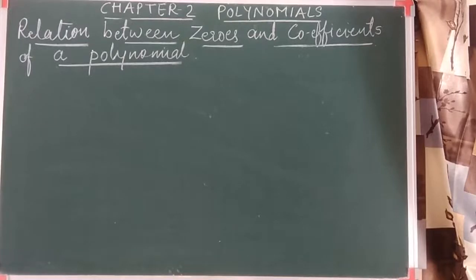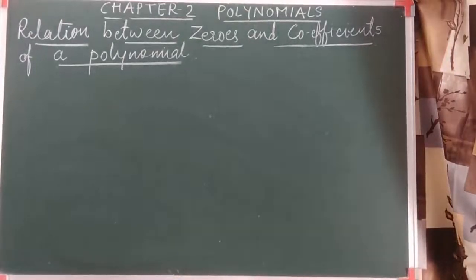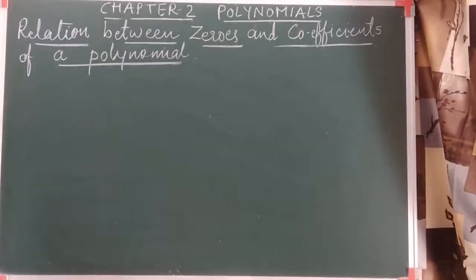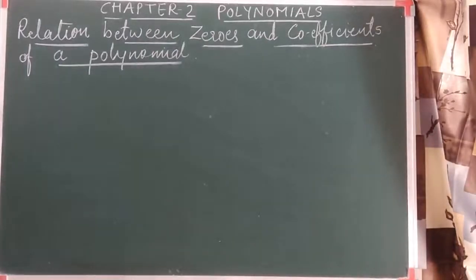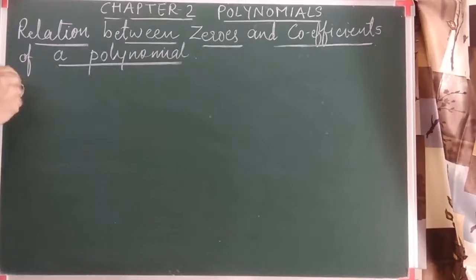Let's begin with the new topic today. It is about the relation between the zeros and the coefficients of the polynomial. We have already discussed the types of polynomials based on their degree, so on that basis we will discuss further.